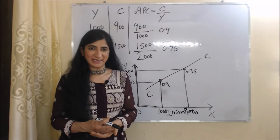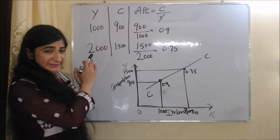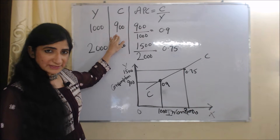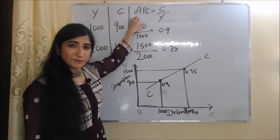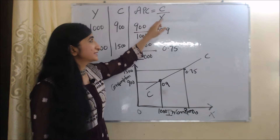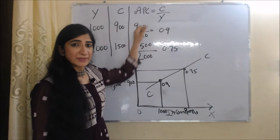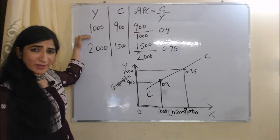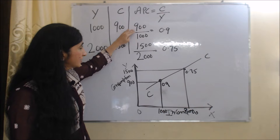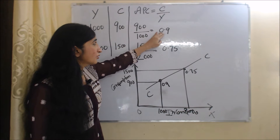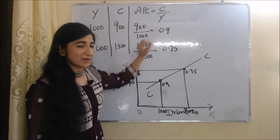Now we will see the table and diagram of APC. In the first column we have income, second column we have consumption, and third column we have APC. As we earlier discussed, the formula of APC is C over Y, where C is consumption and Y is income. In the first case, our income is 1,000 and consumption is 900. 900 over 1,000 equals 0.9, so our APC is 0.9.